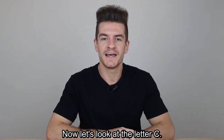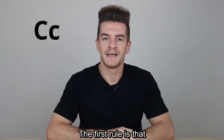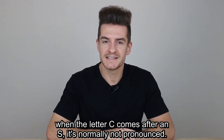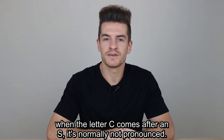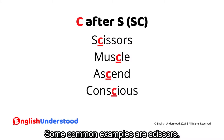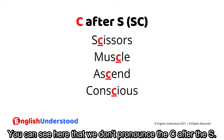Now let's look at the letter C. The first rule is that when the letter C comes after an S, it's normally not pronounced. Some common examples are: scissors, muscle, ascend, conscious. You can see that we don't pronounce the C after the S in these words.